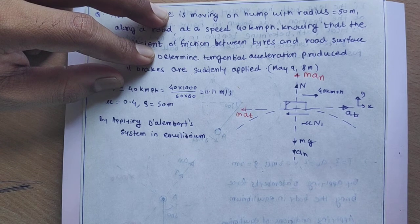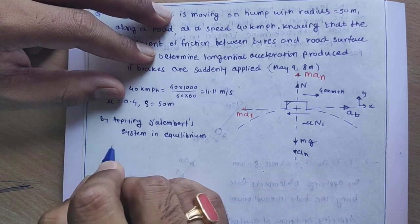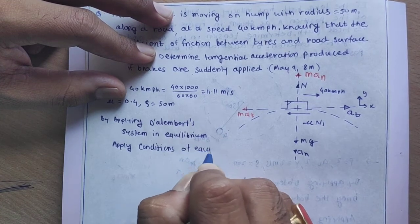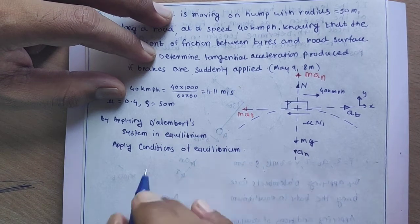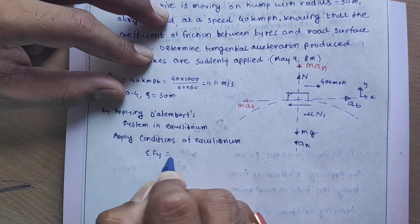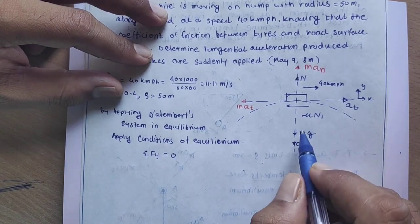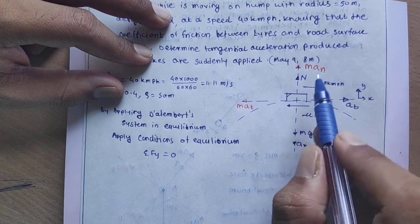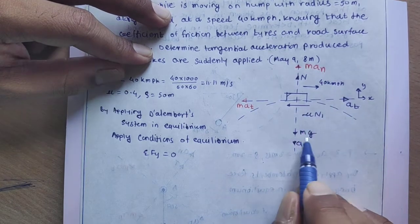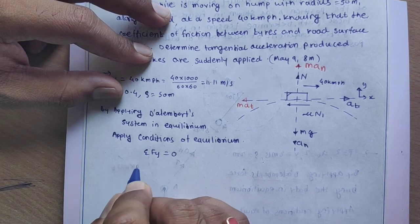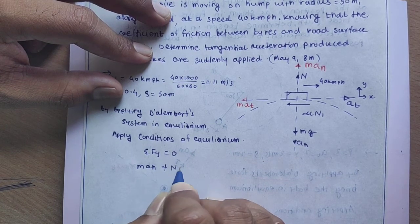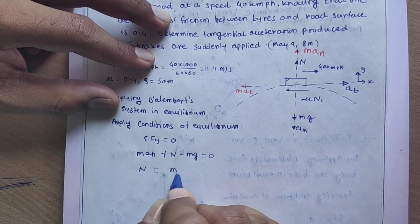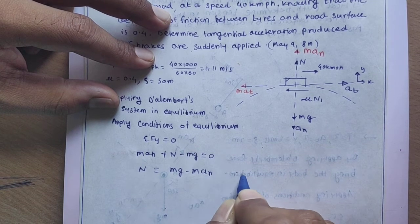Now we have drawn the full FBD. We apply the conditions of equilibrium. Applying summation Fy = 0: in the upward direction the forces are normal reaction N and M·AN, and in the downward direction it is Mg only. So we write: M·AN + N − Mg = 0, which gives normal reaction N = Mg − M·AN. This is our first equation.